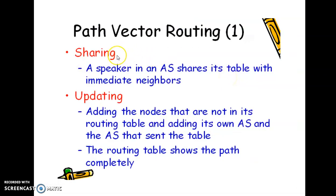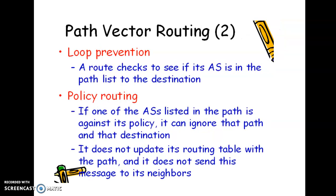The second characteristic is updating. Whenever some changes in the routing table are done, updating is essential. This means adding nodes that are not in its routing table and adding its own autonomous system and the autonomous system that sent the table. The routing table shows the path completely to reach the destination. So the two important characteristics are: first, sharing of the routing table with the immediate neighbor; and second, updating the routing table as and when nodes or autonomous systems are added.